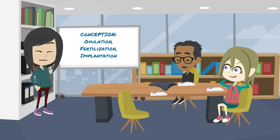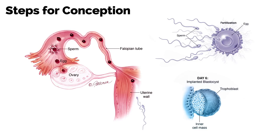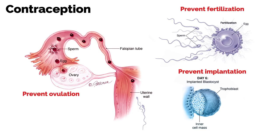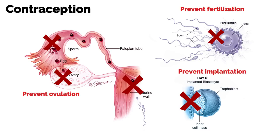Before covering how to prevent fertilization, you need to understand all the necessary steps for conception. First, sperm is deposited in the vagina and must pass through the cervix to the uterus to reach the fallopian tube. Ovulation occurs and the oocyte is released into the fallopian tube, where sperm and oocyte meet to trigger fertilization. Finally, the blastocyst travels to the uterus and implants in the endometrium. Contraception can be grouped by how it functions: preventing ovulation, preventing fertilization, or preventing implantation.